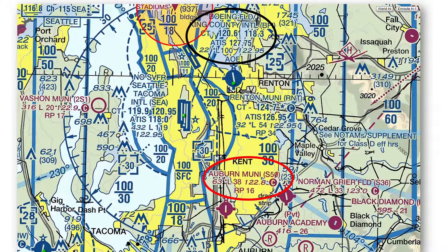The airport elevation is 63 feet, lighting limitations exist, and the CTAF frequency is 122.8. See the letter RP followed by the number 16. This means that pilots need to fly a right-hand traffic pattern when landing on runway 16.